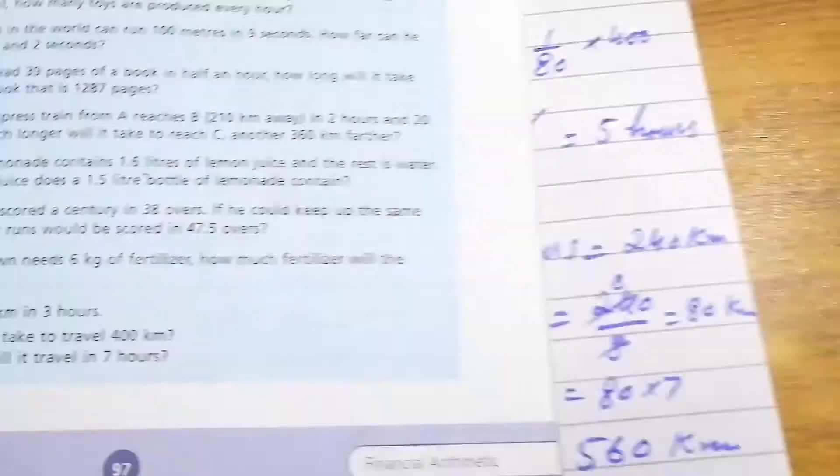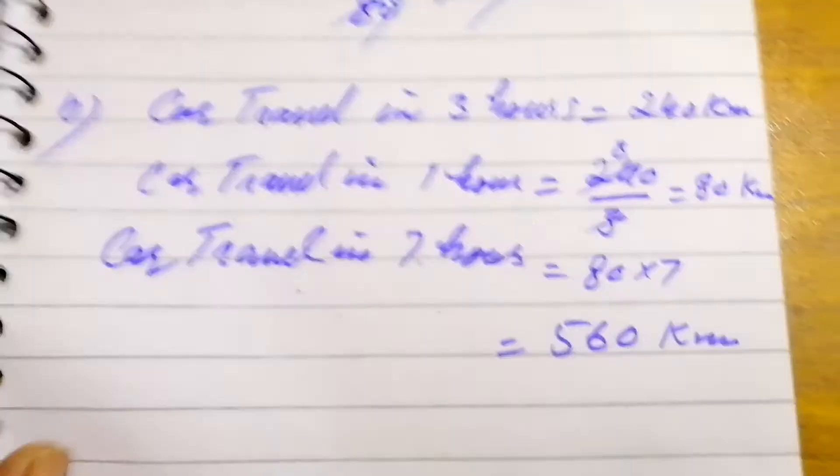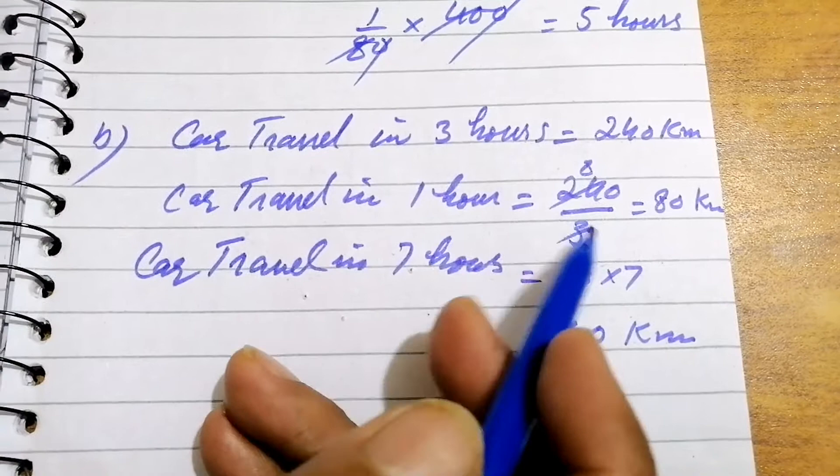Part 2: what distance will it travel in 7 hours? Car travels in 3 hours 240 kilometers. Car travels in 1 hour 240 over 3, 80 kilometers. Car travels in 7 hours: 80 multiply 7, 560 kilometers. It will cover 560 kilometers in 7 hours.